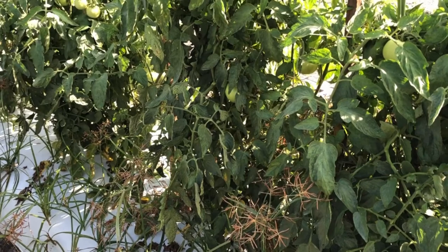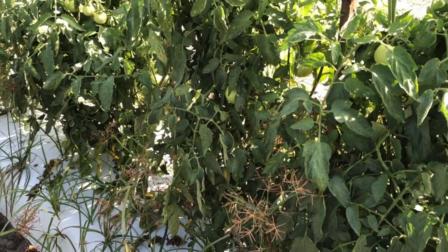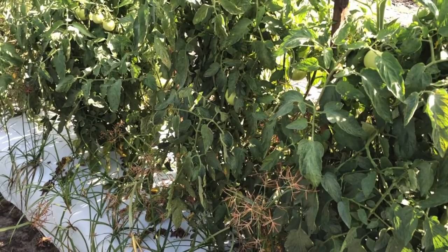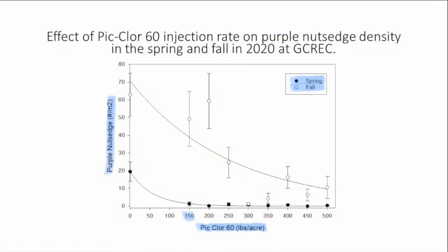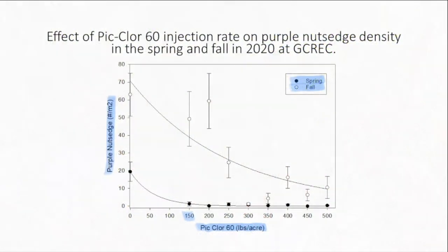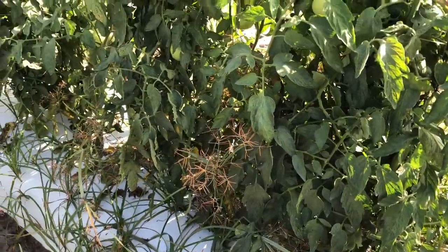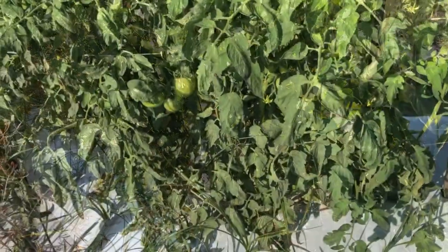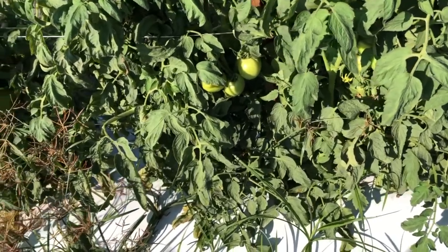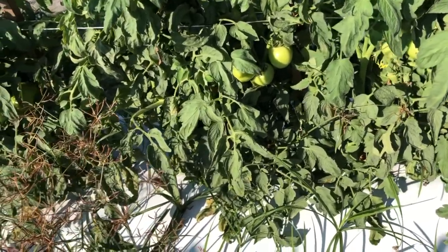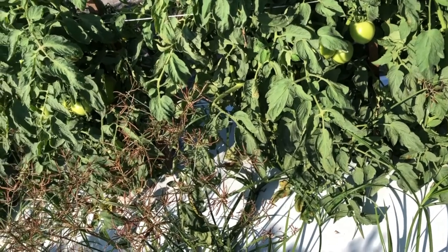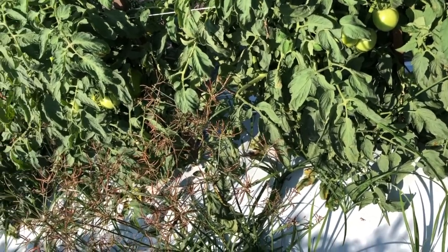The second image is at 150 pounds, done in the fall. If you remember back to the graph, at 150 pounds we didn't have great control, as is reflected in this image with the high density of purple nutsedge still occurring in the plot. In this next image, you can see the 250-pound rate, and again there's still a significant number of nutsedge occurring in the plot.